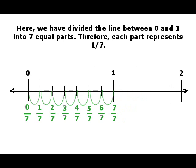Let us take another example. This time, we have divided the segment between 0 and 1 into 7 equal parts. Therefore, each part represents the fraction 1 by 7. The next cut would represent the fraction 2 by 7 and so on until 7 by 7 which once again is the number 1.